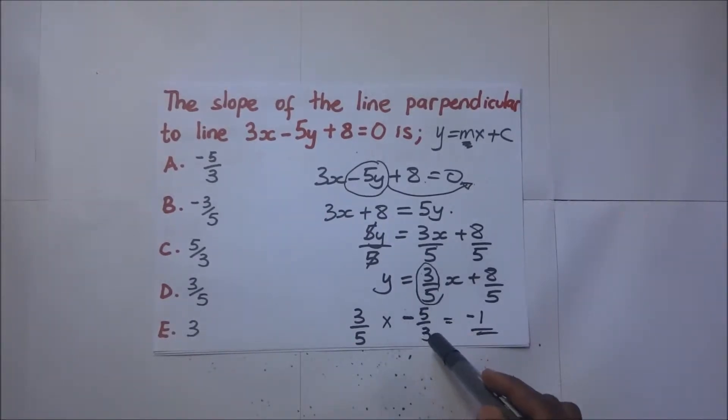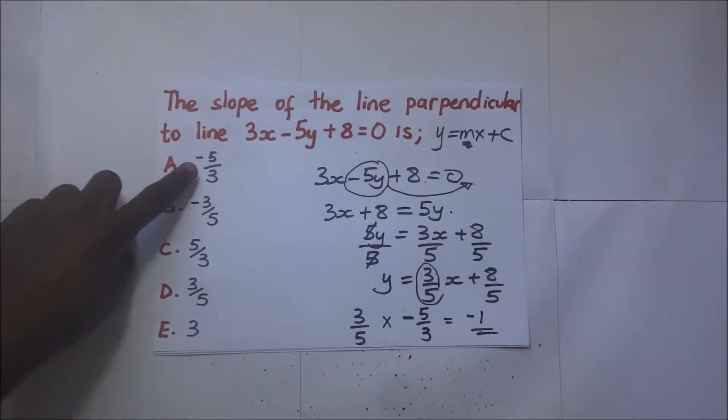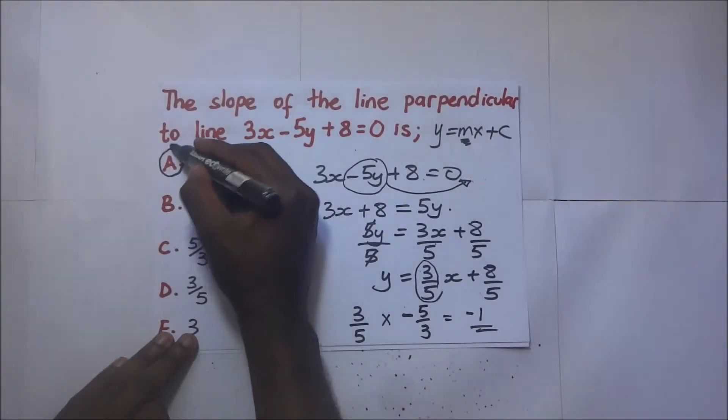This is the gradient of the perpendicular line we are looking for. The answer is negative 5 over 3, which is option A.